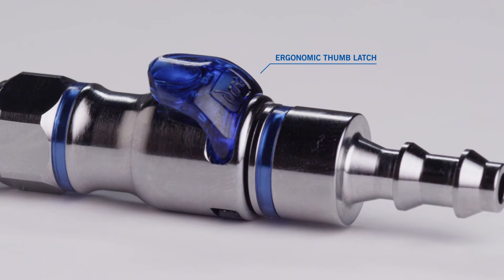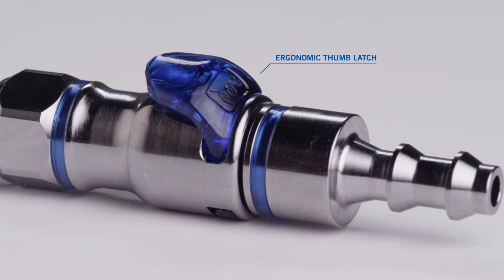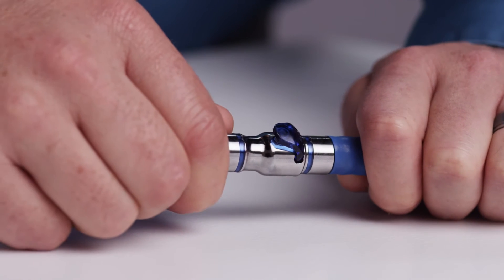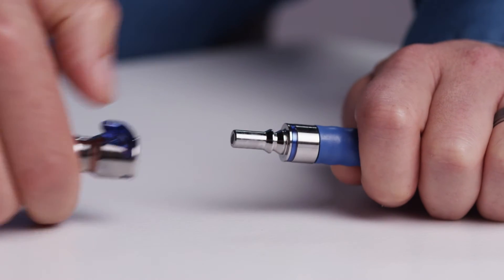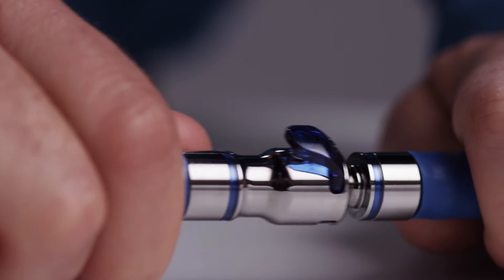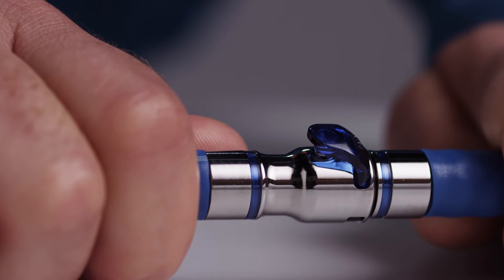Let's take a closer look at the LQ2's features and benefits. With its ergonomic thumb latch, the LQ2 offers quick and easy one-handed connections. This feature makes working in tight spaces much easier. Plus, our audible click assures that a leak-proof connection has been made.